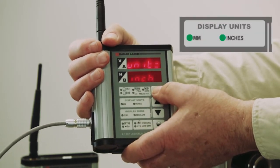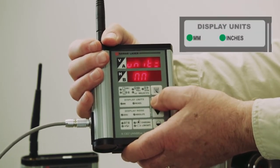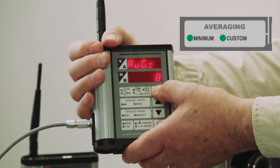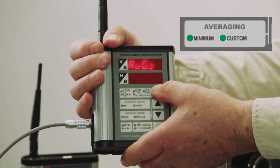I can change my units from inches to millimeters by pressing the up arrow key. The next screen is the averaging. I can increase or decrease the averaging.